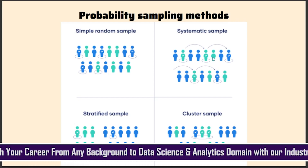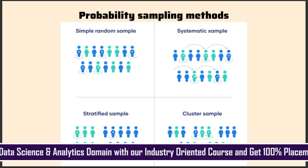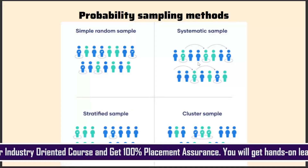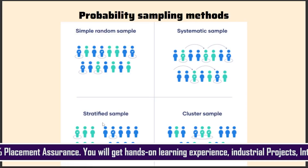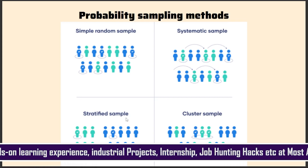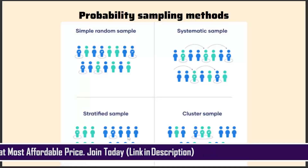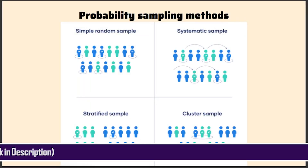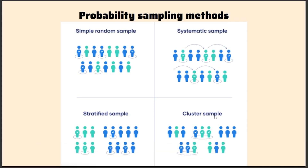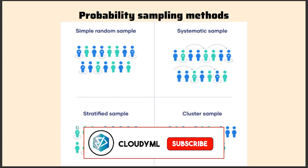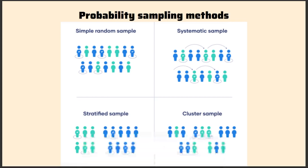Then you have stratified sampling — in this you create small subgroups of the population called strata, and from those strata you randomly pick up any of the samples. Then you have cluster sampling — in cluster sampling you also create small subgroups of the population, but instead of picking one sample from each group, you pick up the entire cluster as the sample.